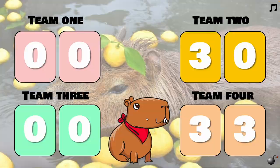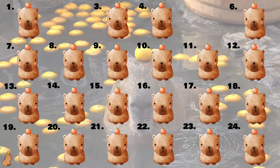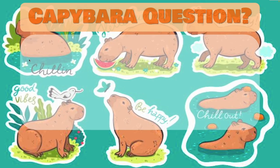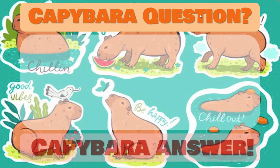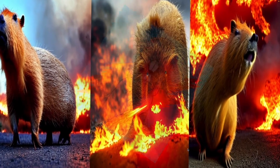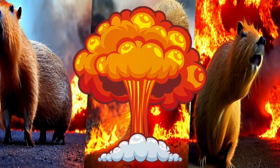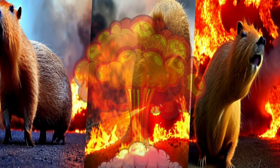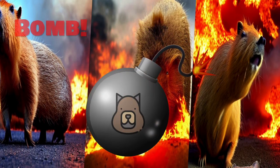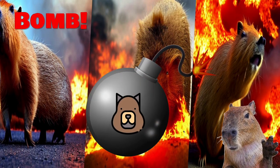Click on the capybara in the middle to take you back to the main question slide. Next I'm going to choose lucky number seven — capybara question and capybara answer. This one is the bomb, very dramatic. So the team that gets this is going to lose all their points. Click on the capybara in the bottom right-hand corner and that takes you back to the points counter.